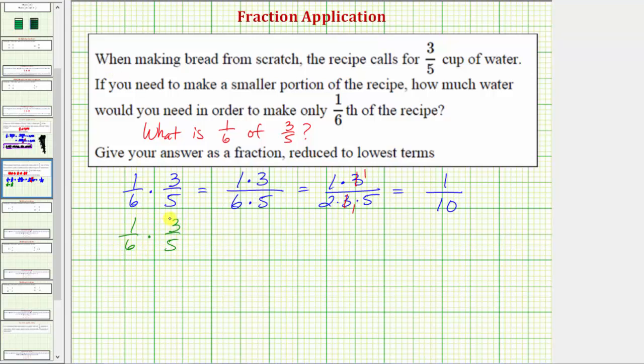We could show the simplifying here, where the three simplifies to one and the six simplifies to two. Showing the work like this does save a little bit of time if we can determine the common factors. The benefit of using the prime factorization is that we actually see the common factors. But either way works.